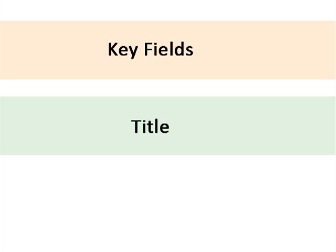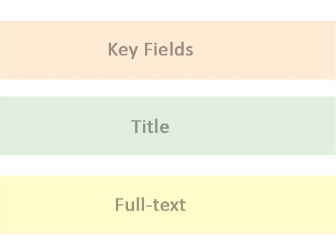Though not always an option, searching in the full text will search the key fields as well as the entire text of the article. This is useful when there are not many articles on your subject, but keep in mind that you may need to make your search much more focused.